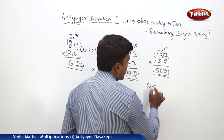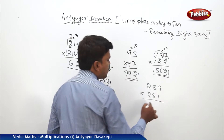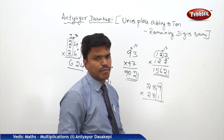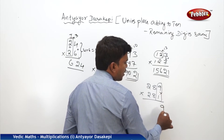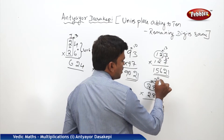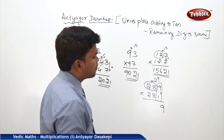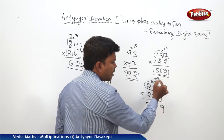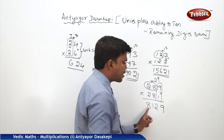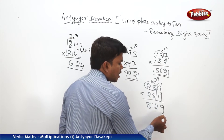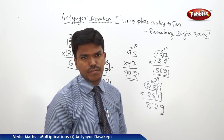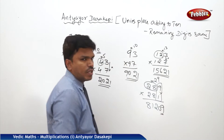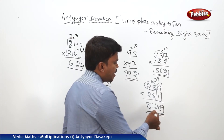Suppose I want to multiply 289 into 281. The rightmost digits 9 and 1 add to 10, and the remaining place digits are both 28 — both conditions apply. What is 9 into 1? It is 9, but remember the right side part of the answer must consist of at least two digits, so write 09. Now 28 should be multiplied with its next number, 29. 28 into 29 is 812. So the final answer is 81209.